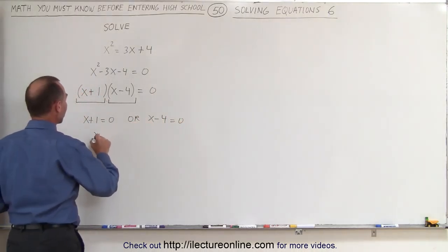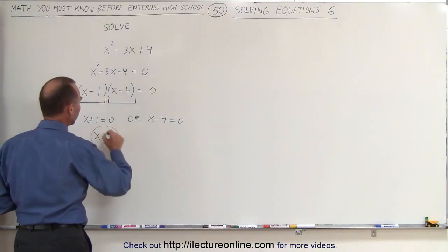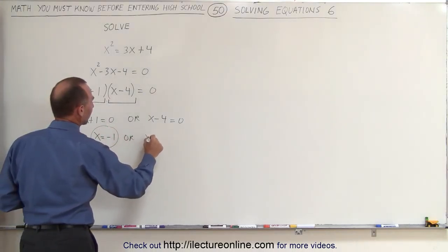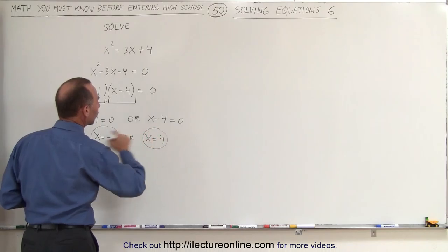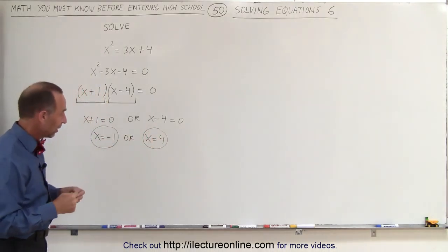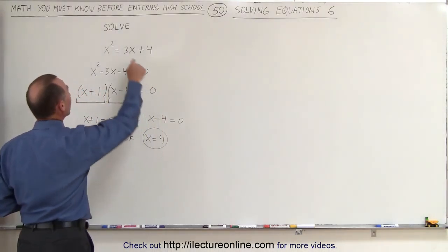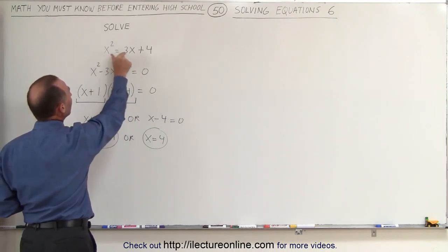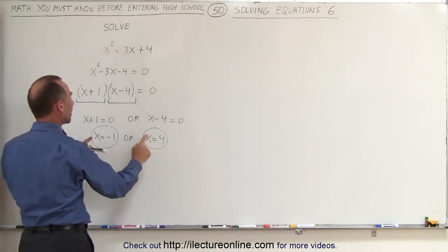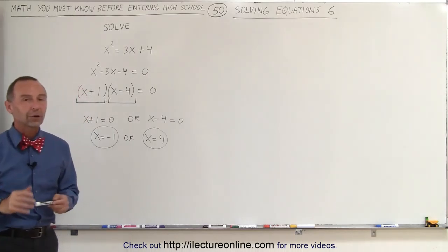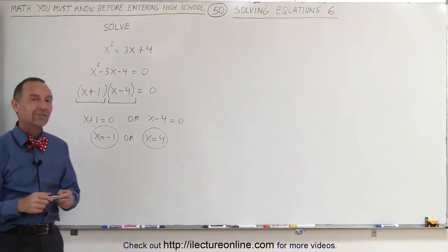That means that x must equal negative 1 or x must equal 4. Either one of those are proper solutions. If you plug any one of these two values back in the original equation, the left side will equal the right side, which means that here are the solutions to that original equation. And that's how it's done.